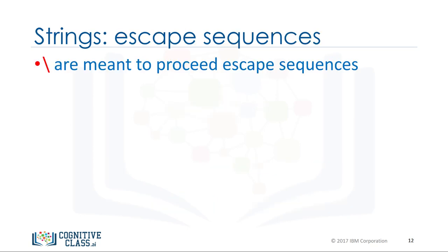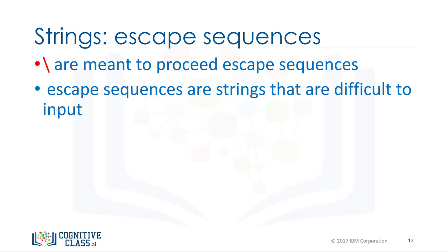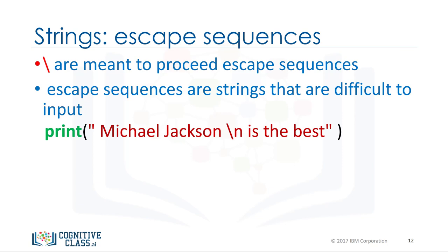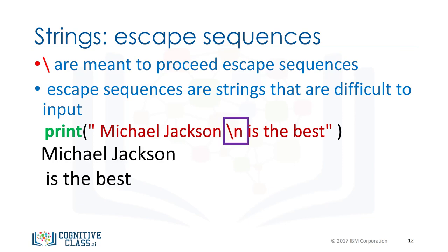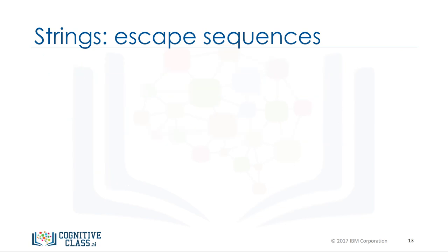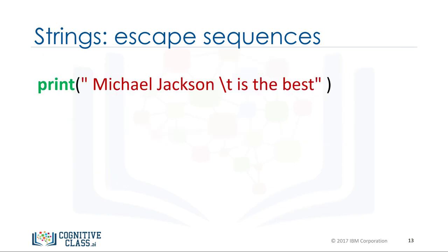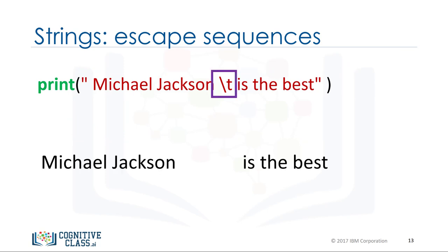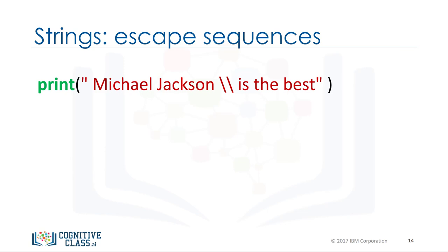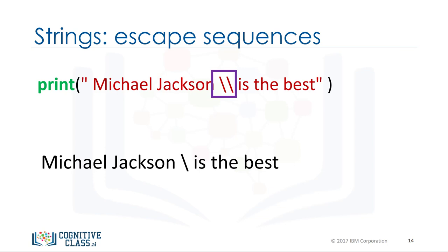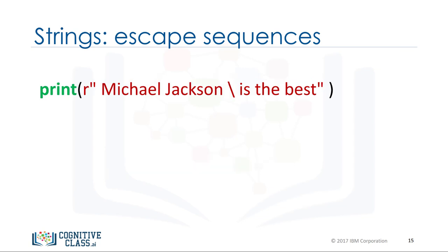Backslashes represent the beginning of escape sequences. Escape sequences represent strings that may be difficult to input. For example, backslash n represents a new line — the output is given by a new line after the backslash n is encountered. Similarly, backslash t represents a tab, with the output showing a tab where the backslash t is. If you want to place a backslash in your string, use a double backslash. We can also place an r in front of the string.